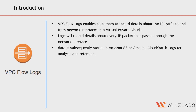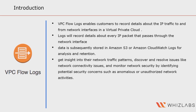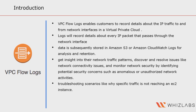Users can utilize VPC Flow Logs to get insight into their traffic patterns, discover and resolve issues like network connectivity issues, and monitor network security by identifying potential security concerns such as anomalous or unauthorized network activities. They can also be used for troubleshooting scenarios like why specific traffic is not reaching an EC2 instance or overly restrictive security groups.